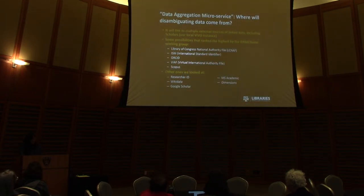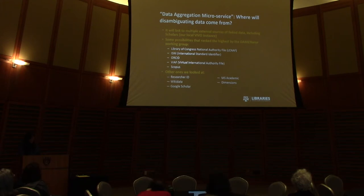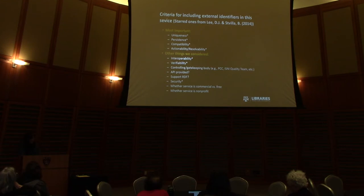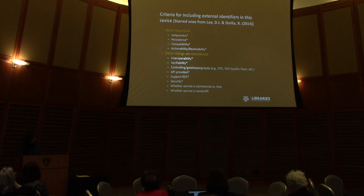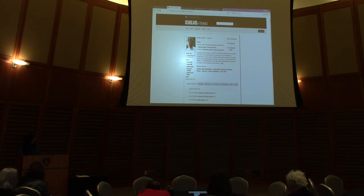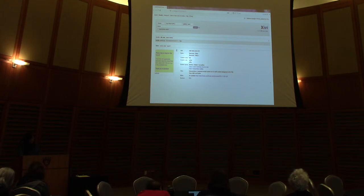The data aggregation microservice will link out to various external sources to pull in contextual data. The first will be our local VIVO instance, the Scholars database. Other sources we might add later include the Library of Congress Name Authority File, ISNI, ORCID, VIAF, and Scopus. These were ranked by the working group using criteria such as: identifiers must be unique, persistent, compatible with existing naming schemes on the web, and actionable — meaning they must resolve to information published on the web. Scholars at TAMU has information useful for disambiguation: bio, affiliations, subject areas of research interest, and positions held. Texas A&M is also a participant in the PCC ISNI pilot from last year, so we have some familiarity with what's in there.